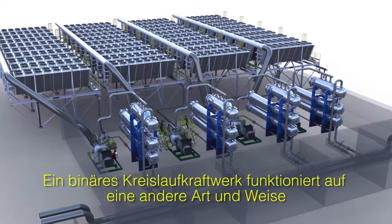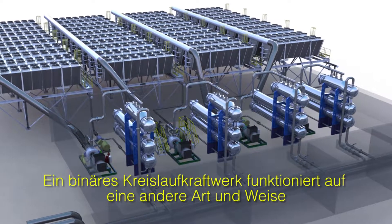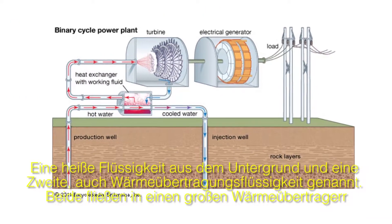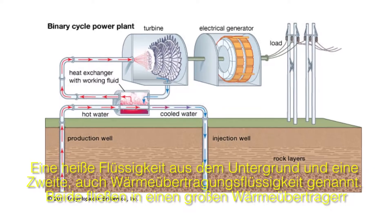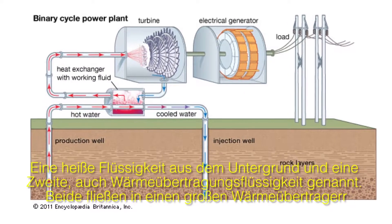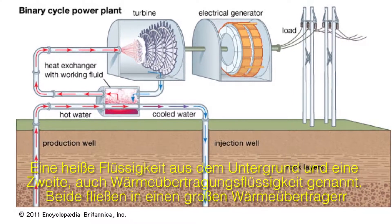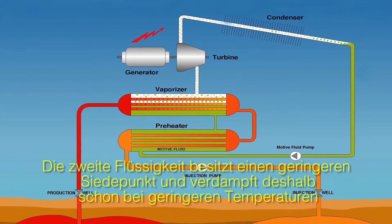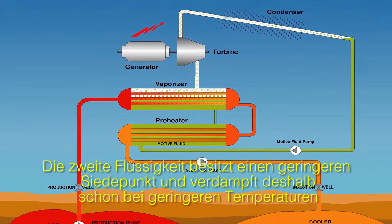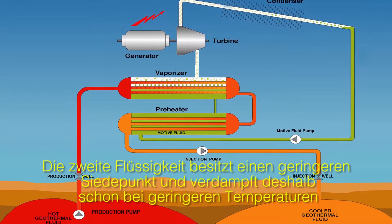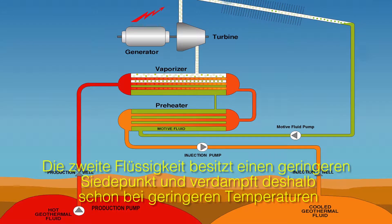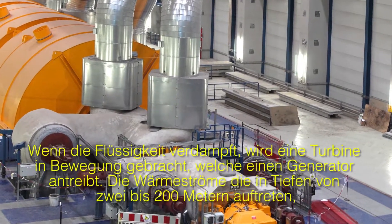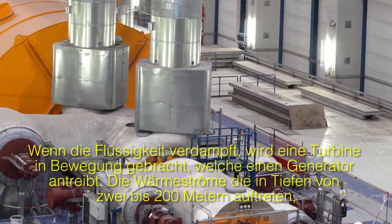A binary plant works differently — it uses two types of fluid. Hot fluid from underground heats a second fluid, called a heat transfer fluid, in a giant heat exchanger. The second fluid has a much lower boiling point than the first fluid, and so it flashes into steam at a lower temperature. When the second fluid flashes, it spins a turbine that drives a generator.